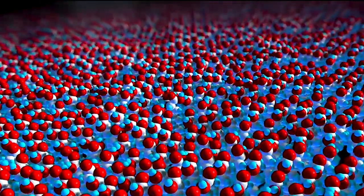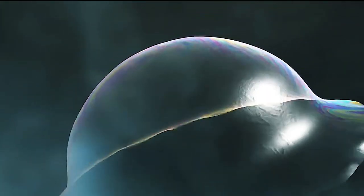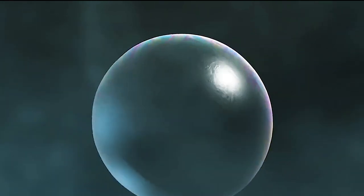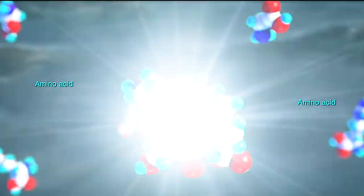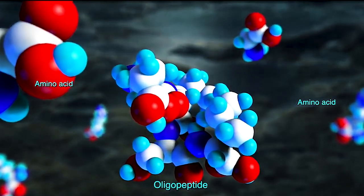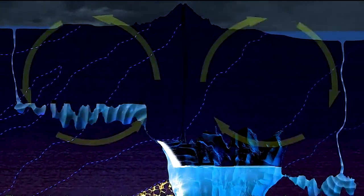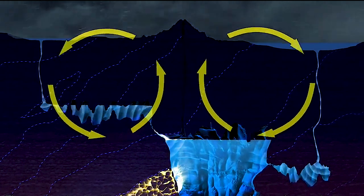Fatty acids came together, encasing the protolife molecules. Polymerization progressed under the wet and dry cycles. Eventually, protein-like basic materials that could act as catalysts were produced. These molecules circulated between the geyser cave and the surface environment. The interactions of these materials led to more complex biomolecules.